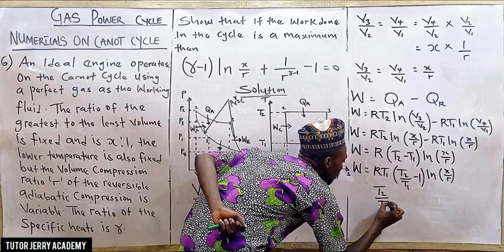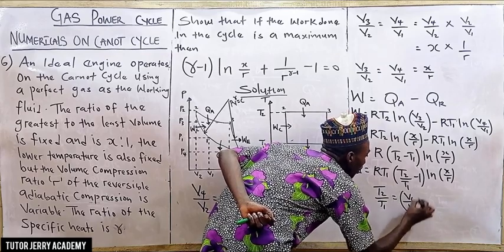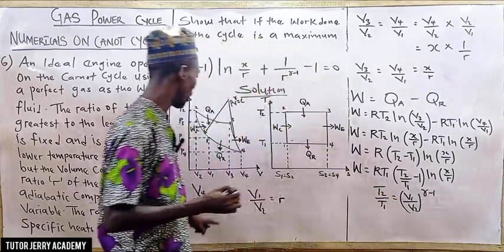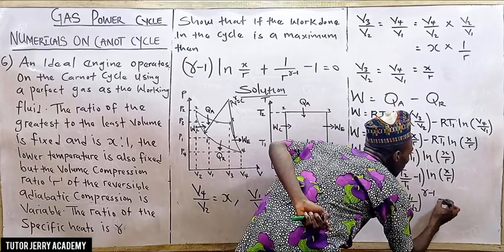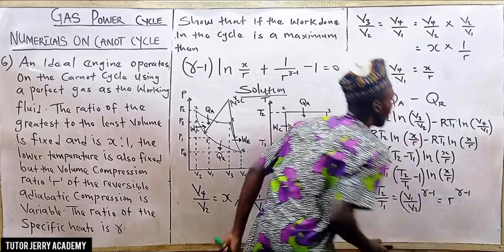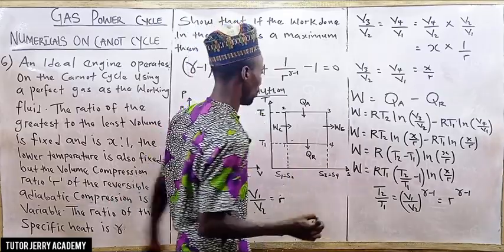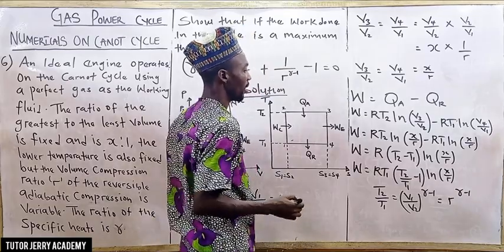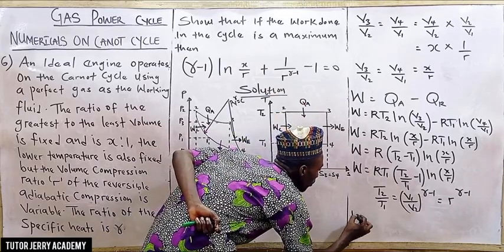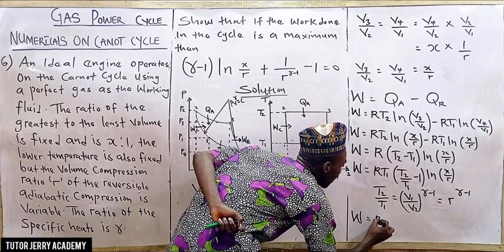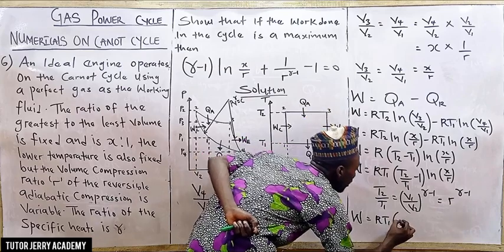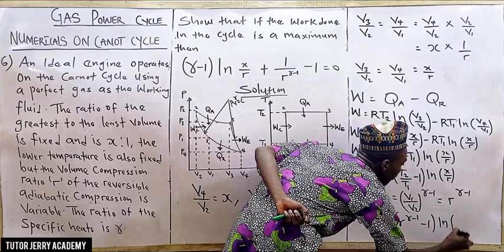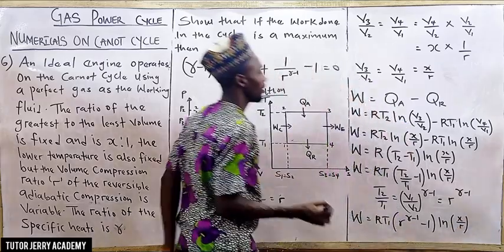Substituting, W = R·T1·(r^(γ-1) - 1)·ln(s/r). This is our expression for work done. To find the condition for maximum work, we differentiate W with respect to the compression ratio r and set it equal to zero.